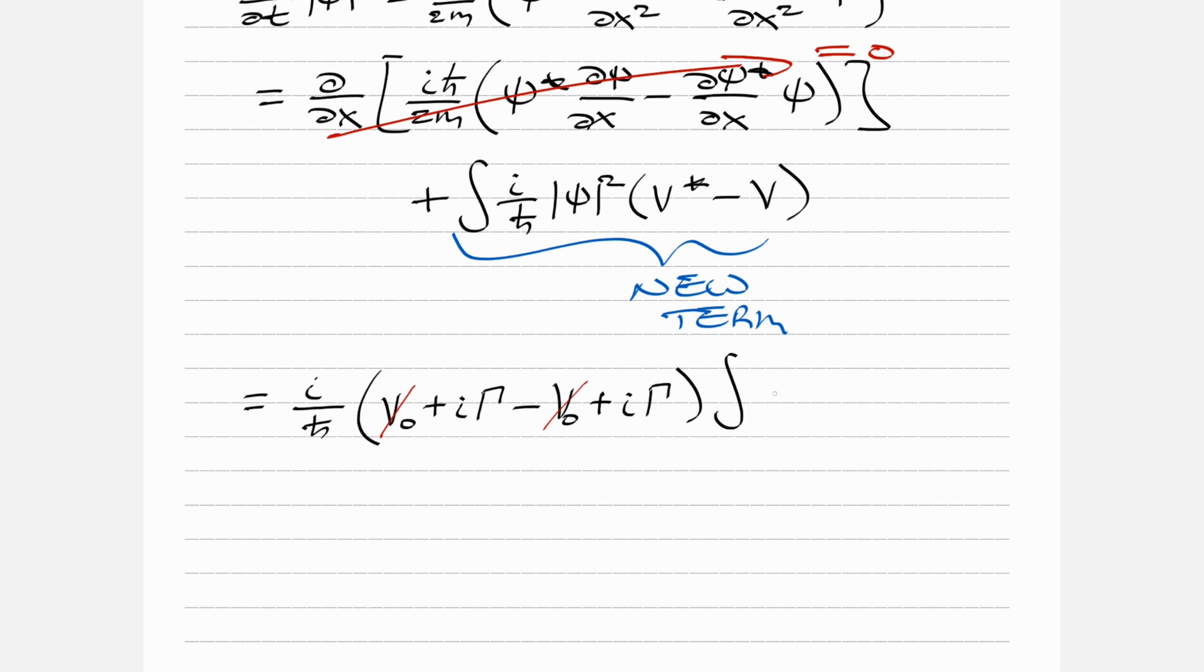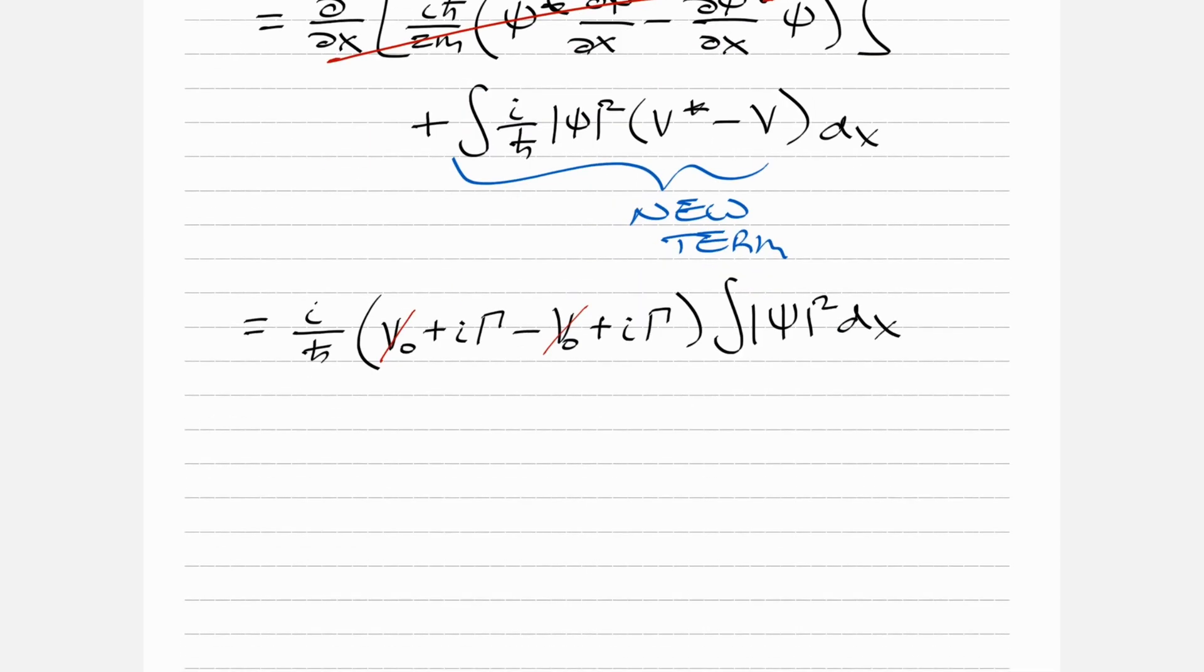Before I get ahead of myself, we still have the integral here of |ψ|² dx. I should have written dx up there too - that's my mistake. Now we're back on track. We have integral |ψ|² dx - this is important because this is how we define P, so we definitely need that.